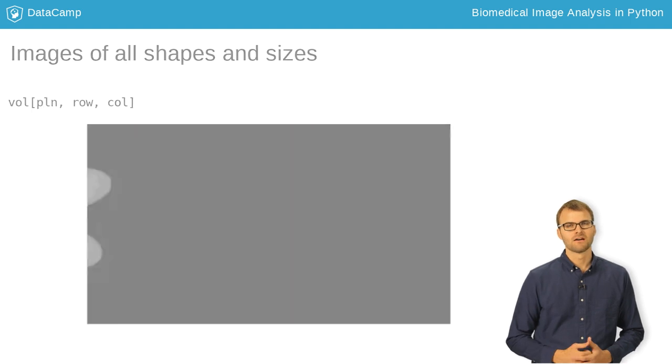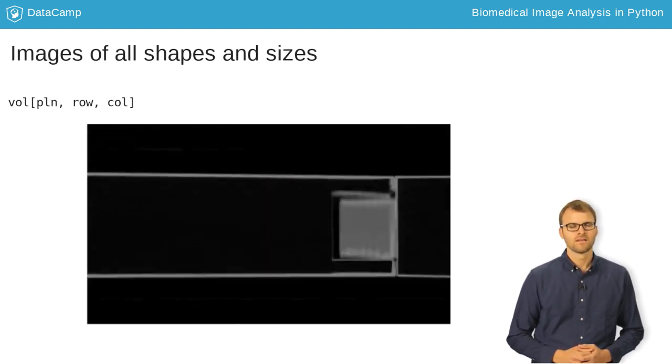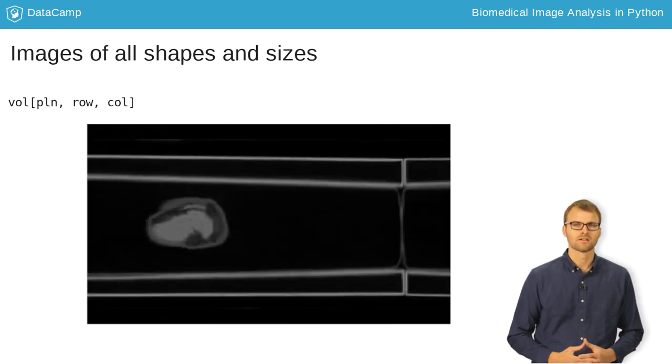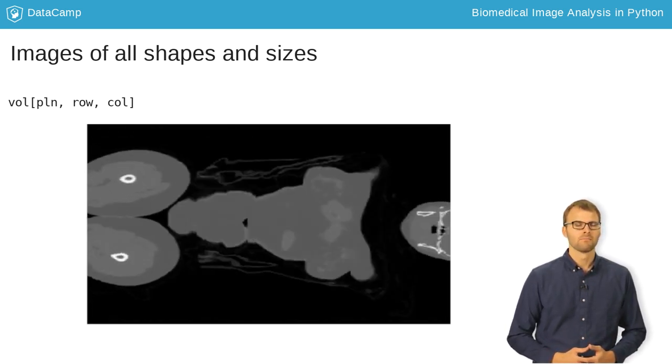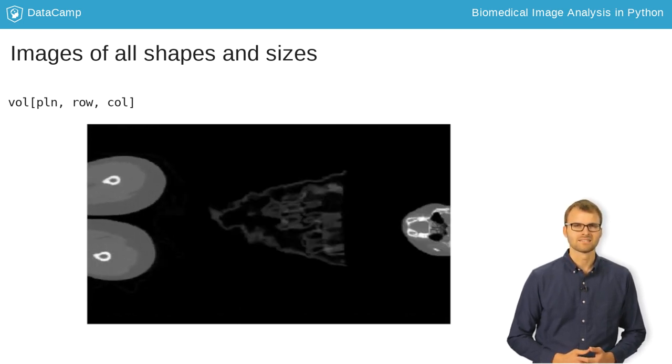3D images cover a volume of space rather than just a single plane. This volumetric data is useful because it can better capture the complexities of the human body, but it can be difficult to visualize because it can't be summarized in a single plot.